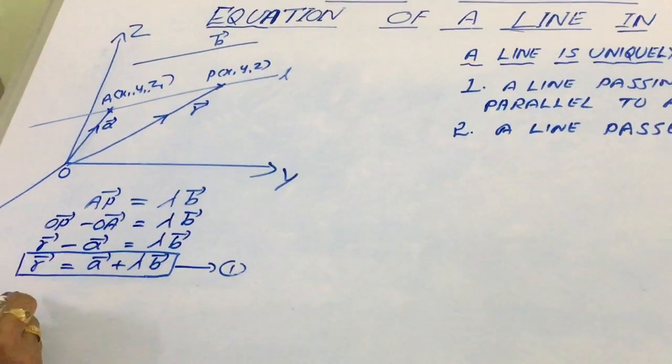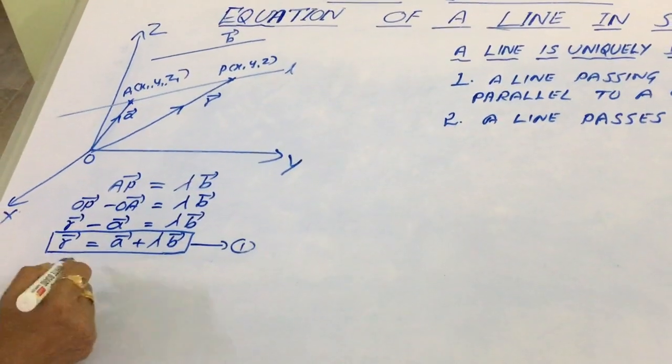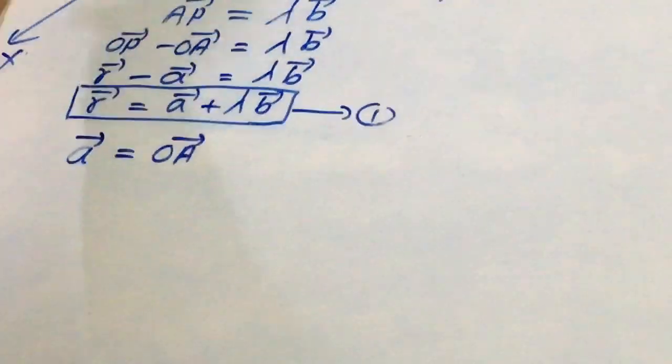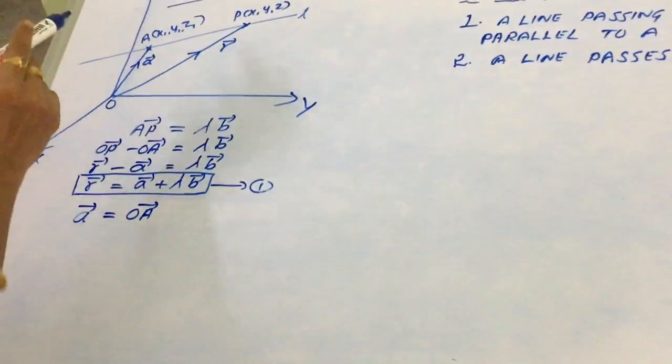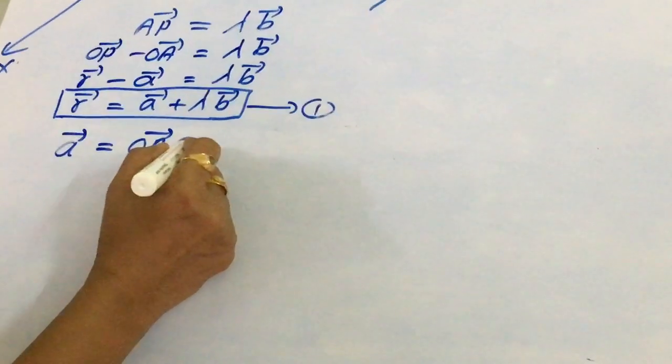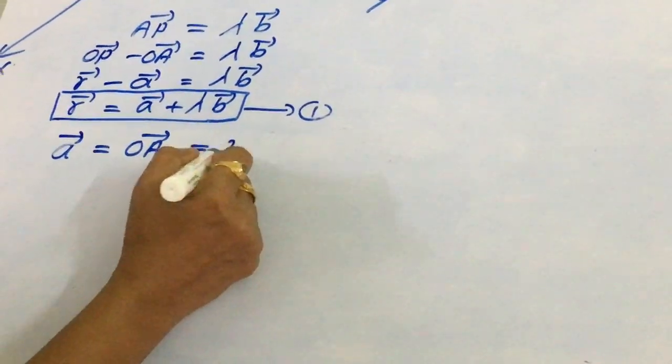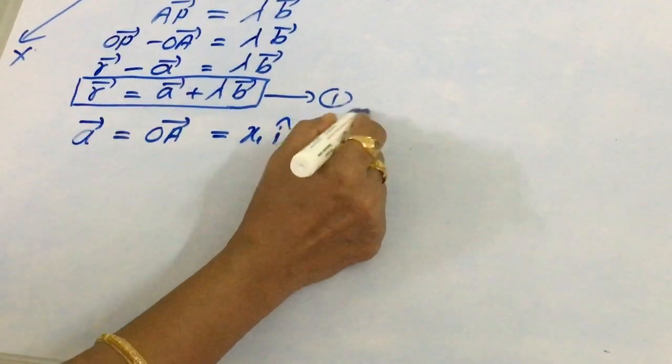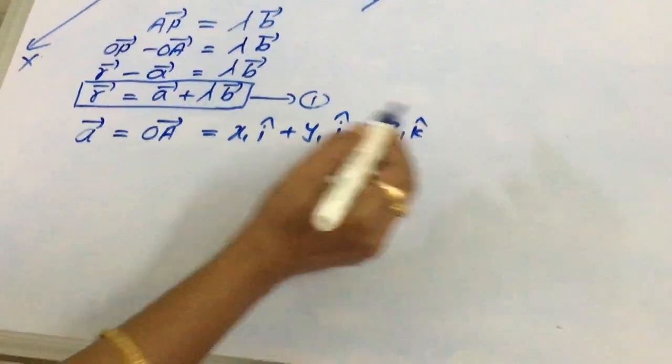For this, we need vector A equal to directed line segment OA. The coordinates of A are (x1, y1, z1). Therefore, OA can be written as x1 i-cap plus y1 j-cap plus z1 k-cap.